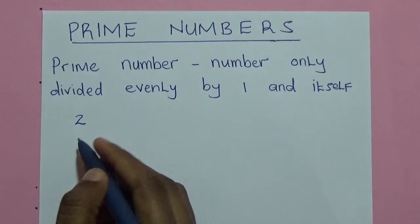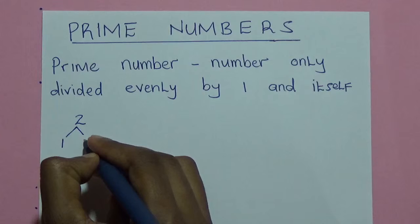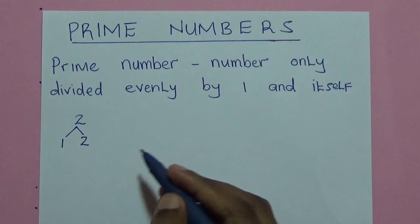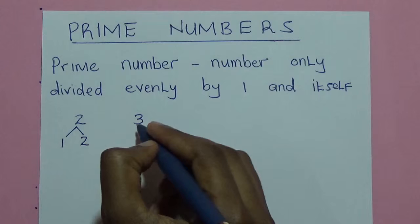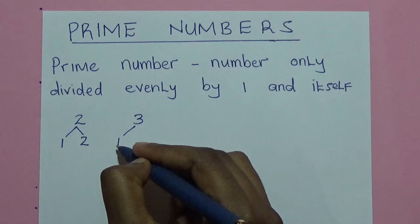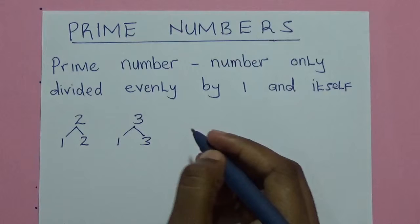We start with number 2. 2 can be divided by 1 and it can also be divided by itself, which is 2. There is no other number which can evenly divide 2. Number 3 can also only be divided by 1 — 3 divided by 1 will be 3 — and it can be divided by itself.